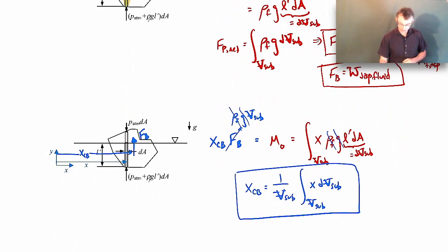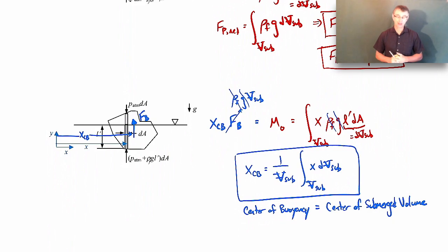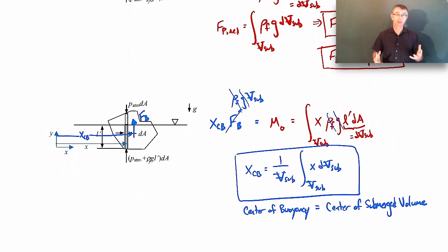That expression for the center of buoyancy is really just the center of the submerged volume — the center of the volume that's underneath the water. The center of buoyancy is equal to the center of submerged volume. This holds true for both partially and fully submerged objects. So the center of buoyancy occurs at the center of submerged volume — it's not the center of mass, it's the center of submerged volume.